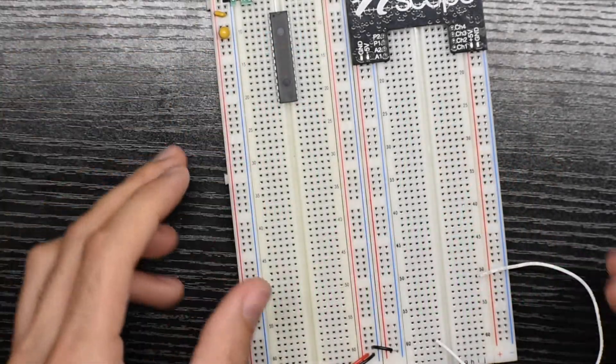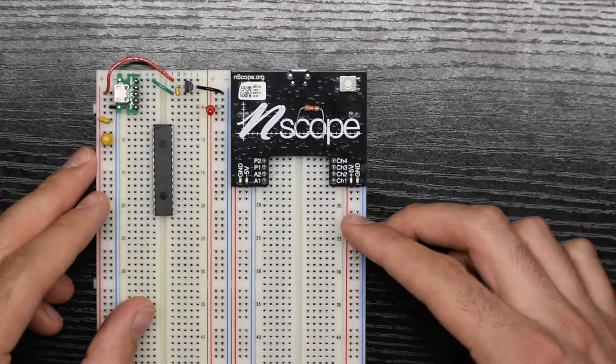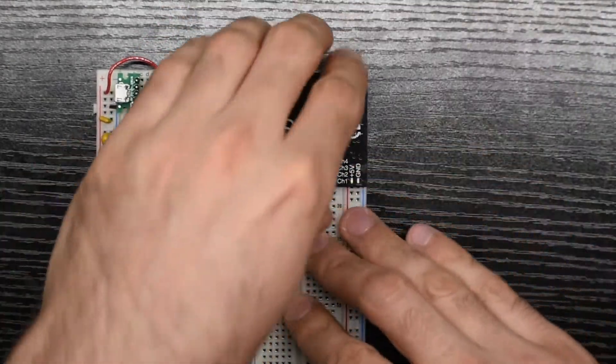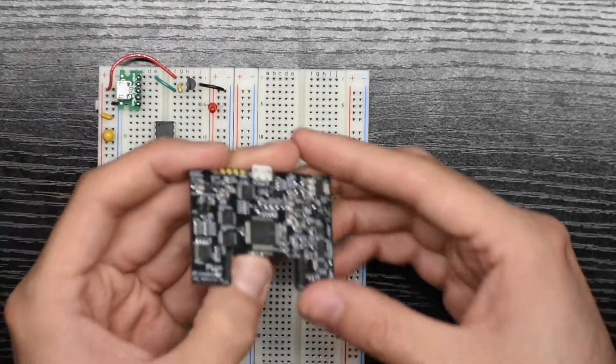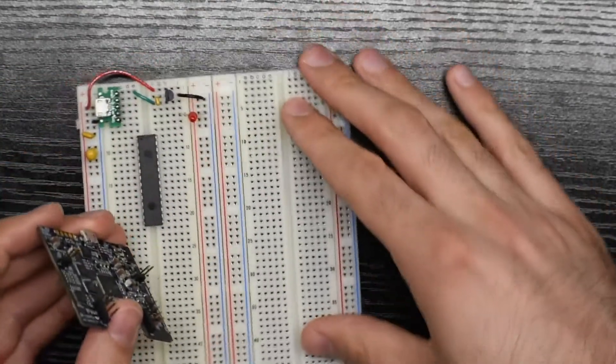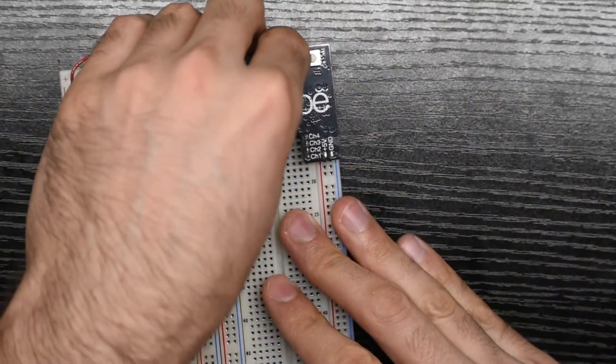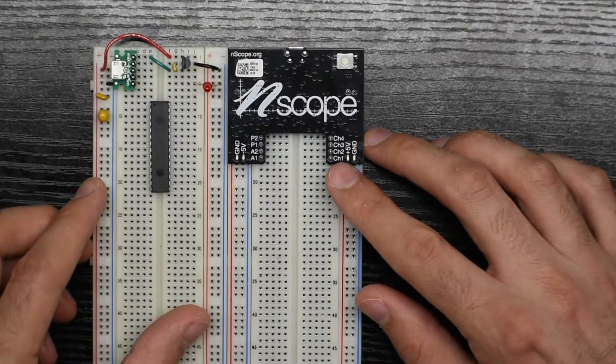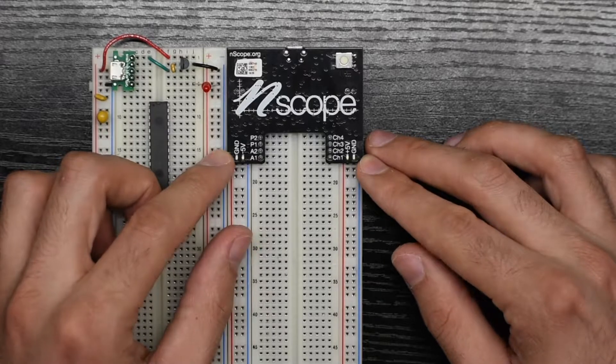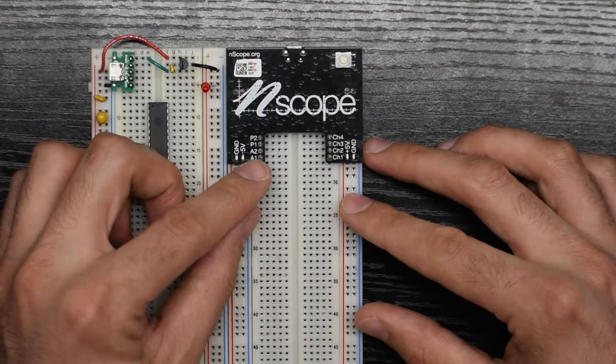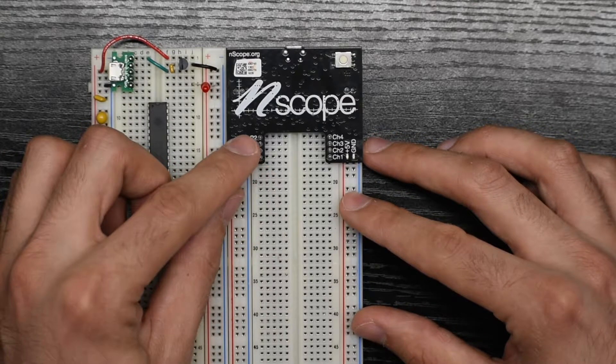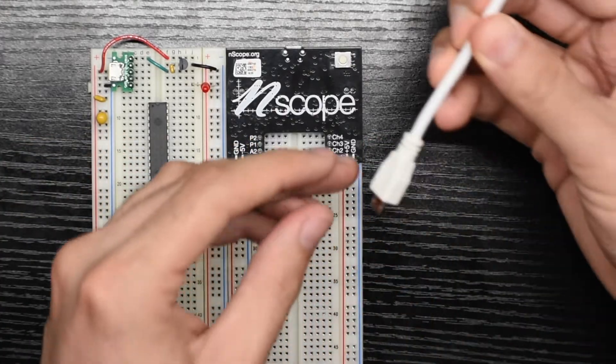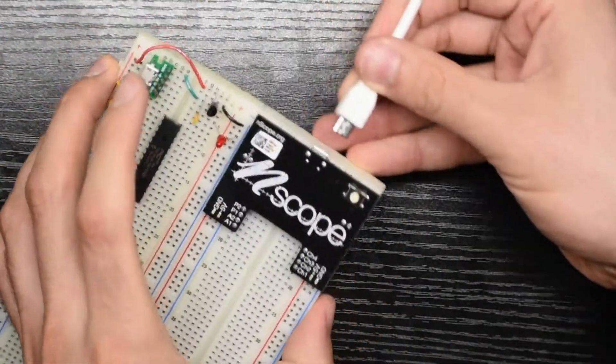Now the last thing we'll talk about is the N-Scope. So here we can see our N-Scope, and it's literally just a board that plugs into the top of a standard breadboard. So if you don't like the positioning of it, just pull it out and plug it back in. The N-Scope is a four-channel oscilloscope. It's also a bipolar power supply, and it has two sine or triangle wave outs and two PWM outs.